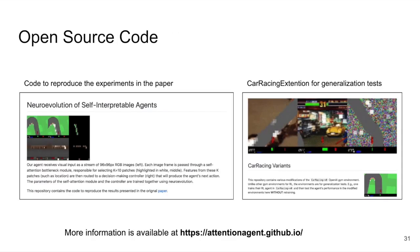Okay, finally, we open-sourced the code for reproducing all the experiments in the paper. In addition, we also released Car Racing Extension, a collection of modified car racing environments to facilitate future researches in agent generalization. For more information about this work, as well as to use the code, please visit the link at the bottom of the slide.